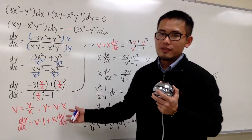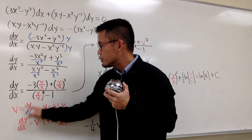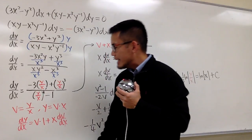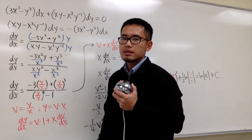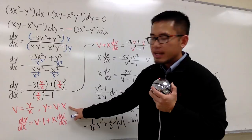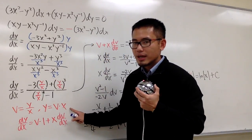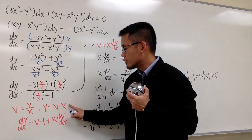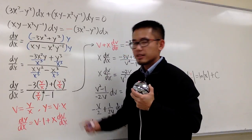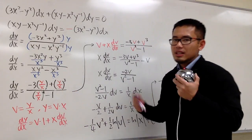Since the right-hand side is expressed entirely in terms of y/x, we can use substitution. We let v equal y/x. Multiplying both sides by x gives y = vx. Differentiating both sides: the left side gives dy/dx, and the right side uses the product rule — we keep v times the derivative of x (which is 1), plus x times the derivative of v, which is dv/dx. So dy/dx equals v plus x(dv/dx).